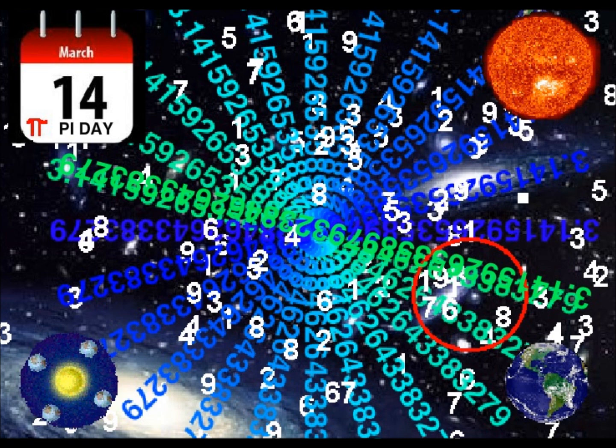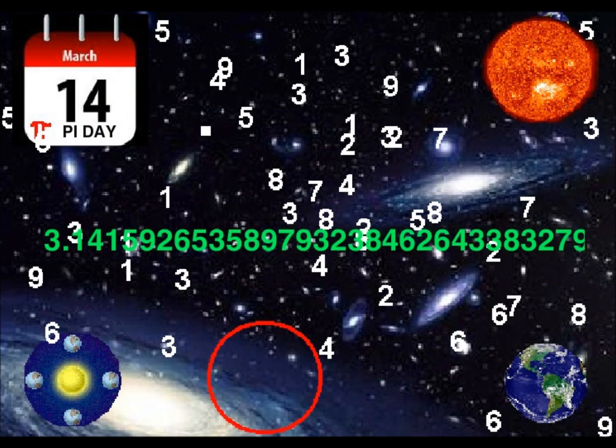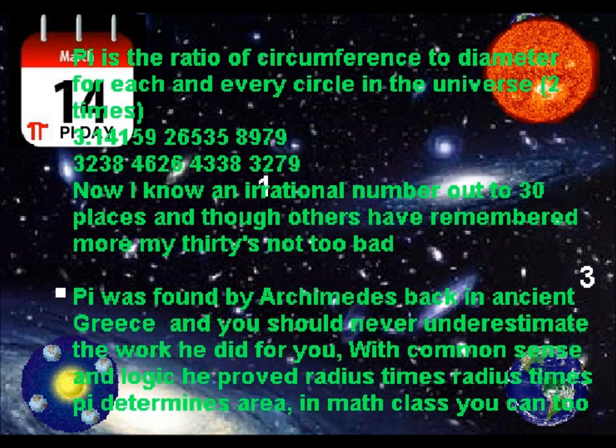Pi was found by Archimedes back in ancient Greece, and you should never underestimate the work he did for you. With common sense and logic, he proved radius times radius times pi determines area — a formula you can use in math class.